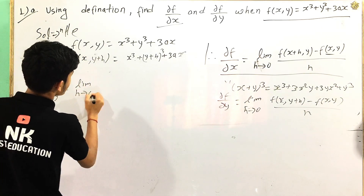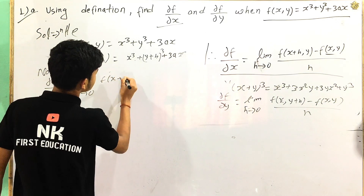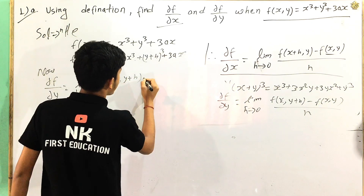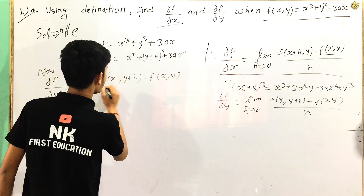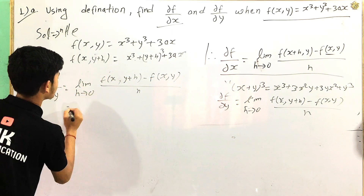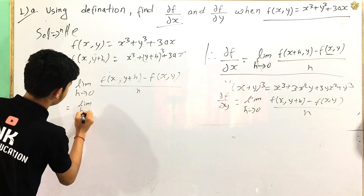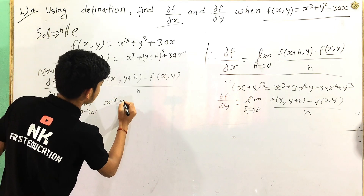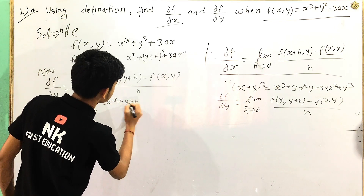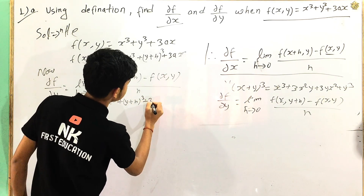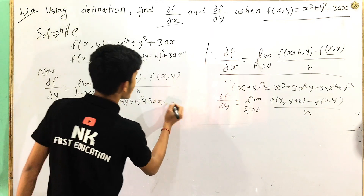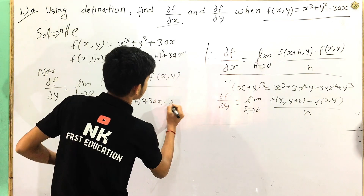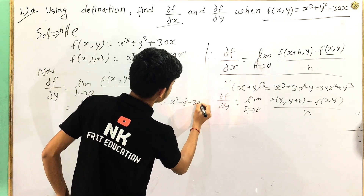Using definition, df by dy, limit h tends to 0 of [f(x, y plus h) minus f(x, y)] divided by h. Putting in x value: limit of [x cube plus (y plus h) cube plus 3ax] minus [x cube minus y cube minus 3ax], all divided by h.